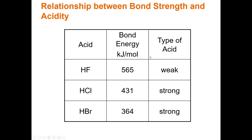We can see a measurement of how strong these bonds are using bond energy in kilojoules per mole — the amount of energy that a compound must absorb before the bond breaks. For HF it's 565 kJ/mol, whereas for HBr it's 364 kJ/mol, and for HI it would be even less. A weak bond means H is more likely to fall off, leading to a strong acid. A strong bond with high bond energy means H is unlikely to fall off — that would be a weak acid.